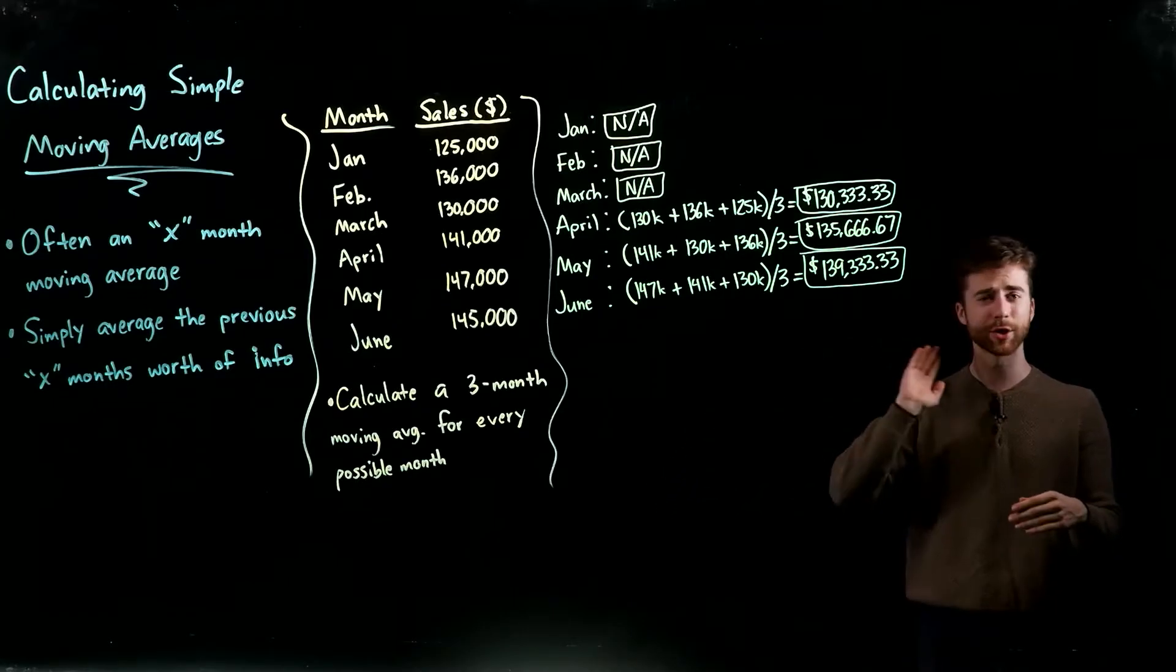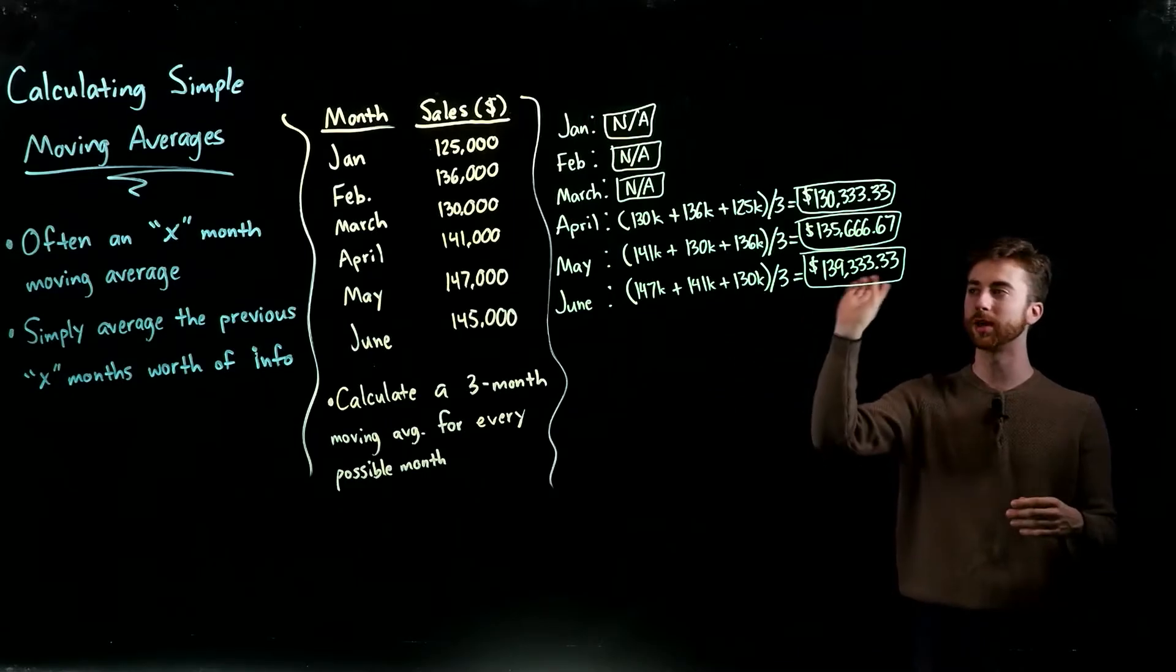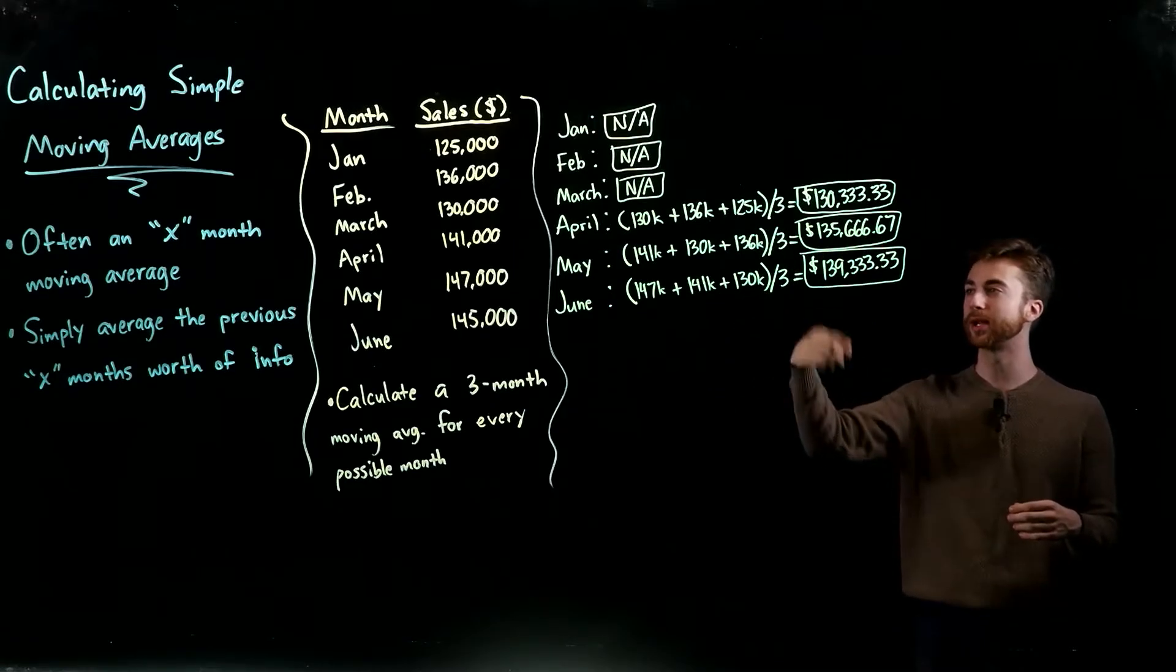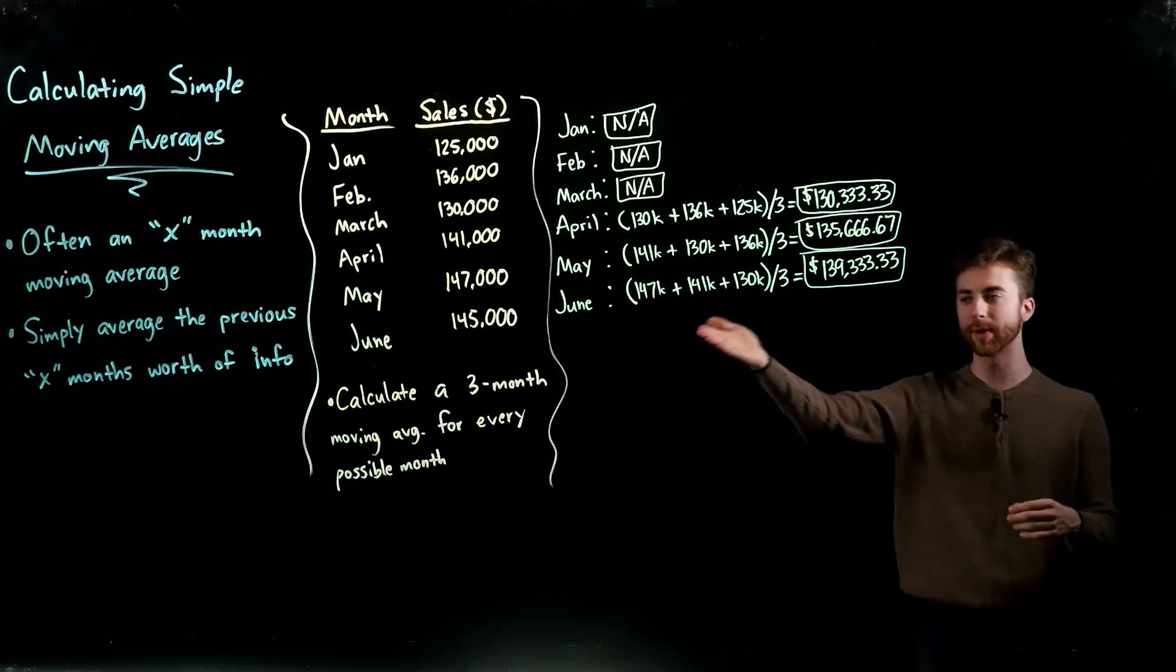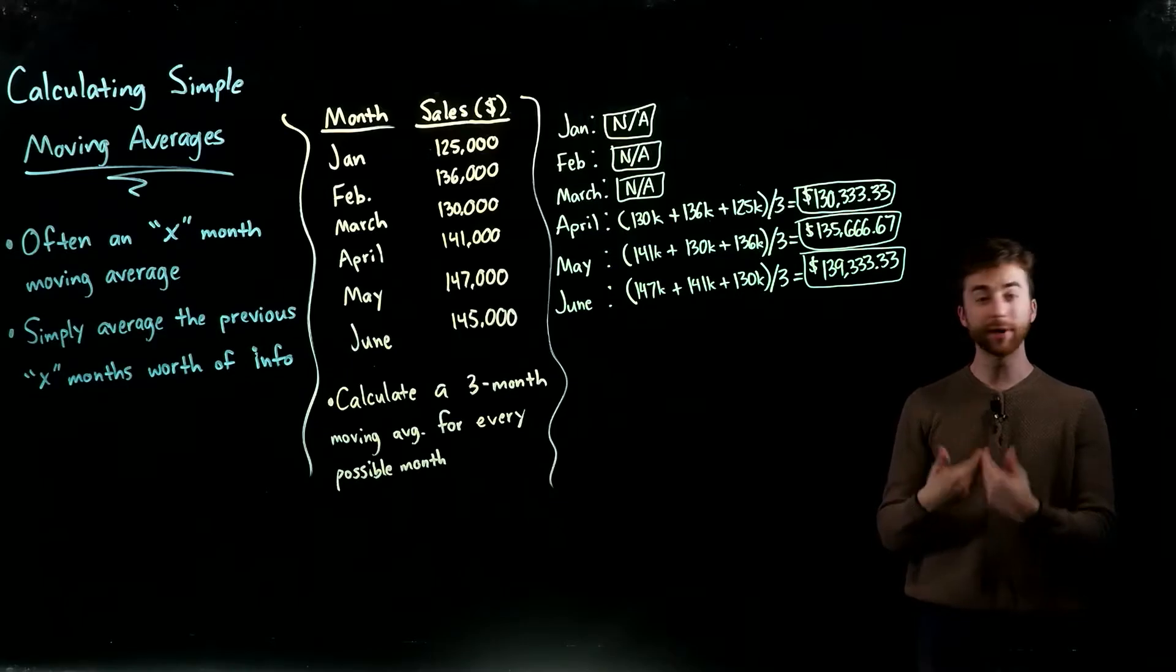Let's go through a quick example. Given this information right here where I have six months worth of information—January through June and some sales figures relating to those months—I want to calculate a three-month moving average for every possible month.